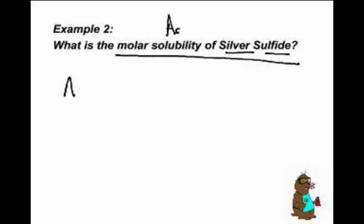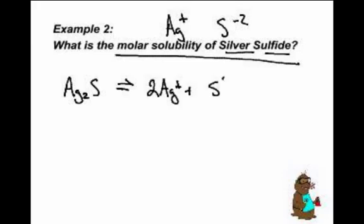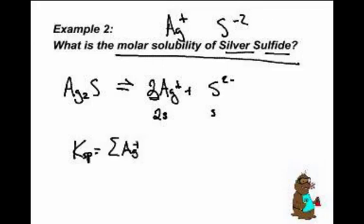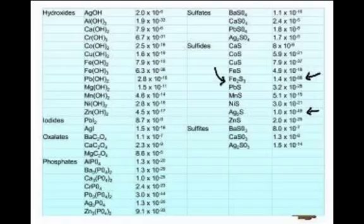Silver sulfide: Ag is +1 and S is -2, so the formula is Ag₂S, which breaks apart into 2 Ag⁺ and S²⁻. When this dissolves, it's almost like a BCA table. We use S for solubility: the silver concentration becomes 2S and the sulfide concentration becomes S. The Ksp equals [Ag⁺]² times [S²⁻], so that's (2S)² times (S). The Ksp value from our table is 1.6 × 10⁻⁴⁹.